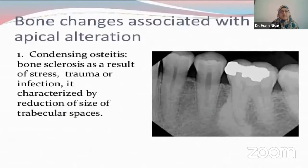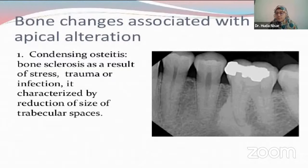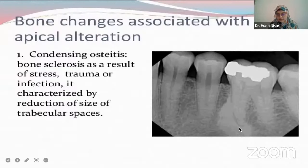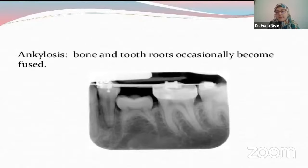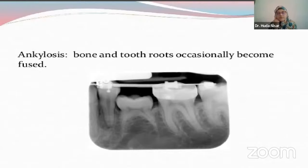Then we have bone changes associated with apical alteration. We have condensing osteitis, which is a very common finding. It is associated with the root apex and is an immune response of the body that helps in buttressing the bone against trauma or infection. It could be observed very close to the apex, and there is a very defined radiopaque lesion with irregular margins that can be well appreciated on the radiograph. Now we have ankylosis. The tooth most highly ankylosed is the second deciduous mandibular molar. Clinically, when you percuss the tooth it will give a metallic sound, and a definitive diagnosis can be made by radiographic intervention. The roots are completely fused with the surrounding bone and there is complete obliteration of the periodontal space.